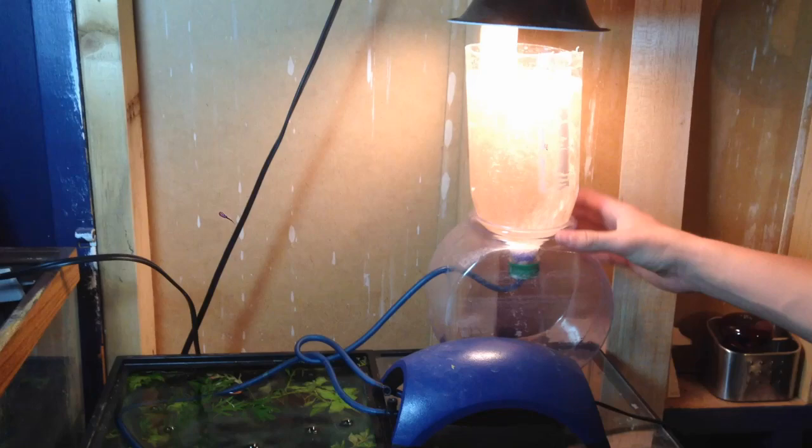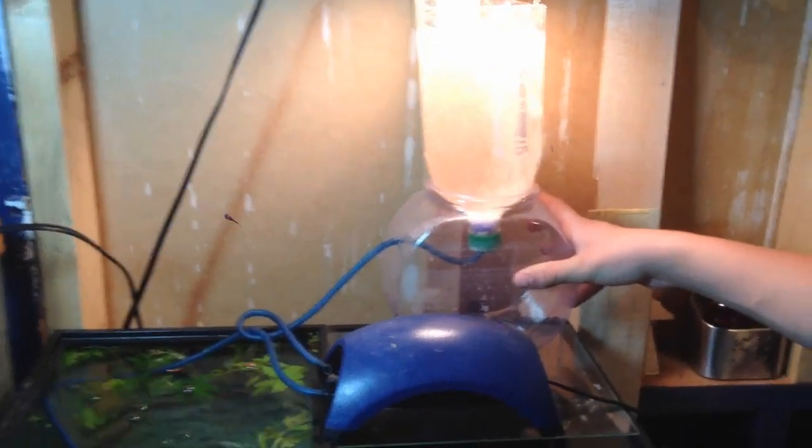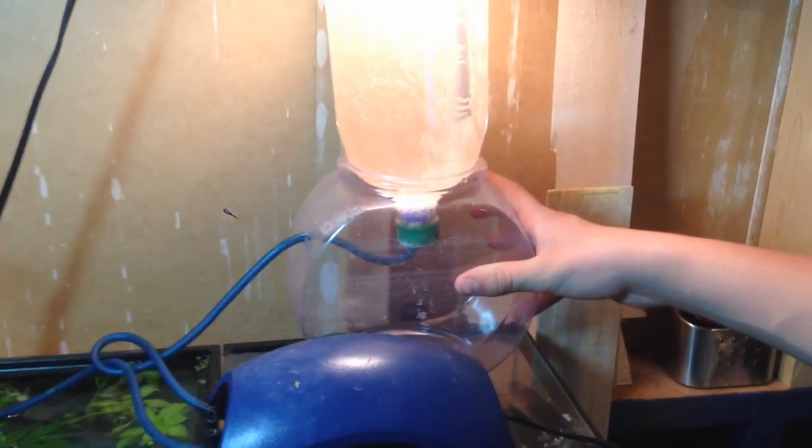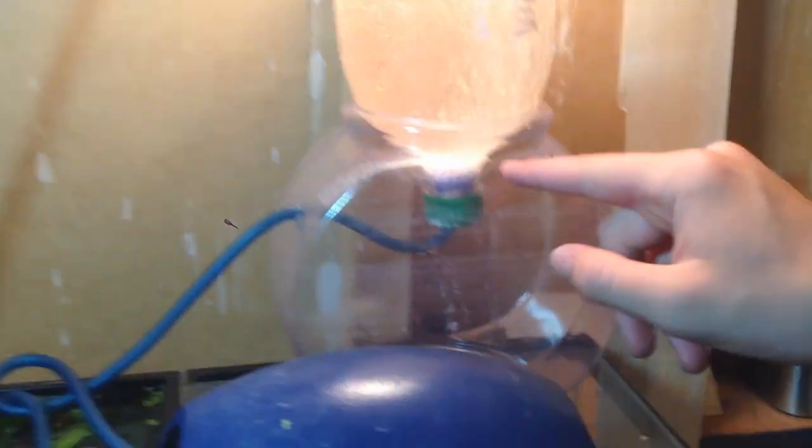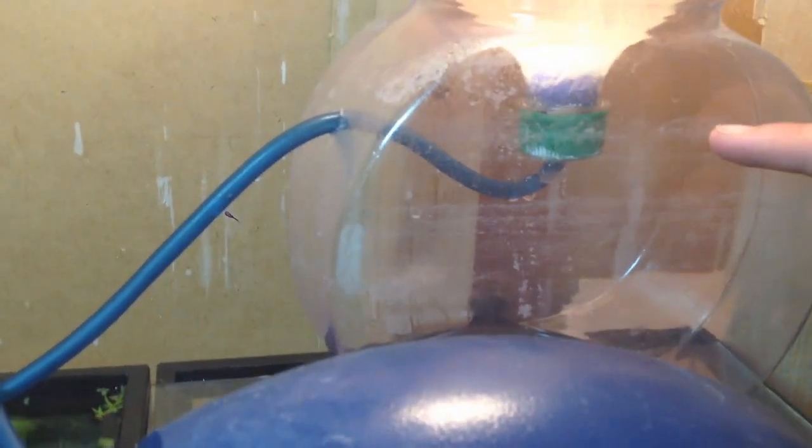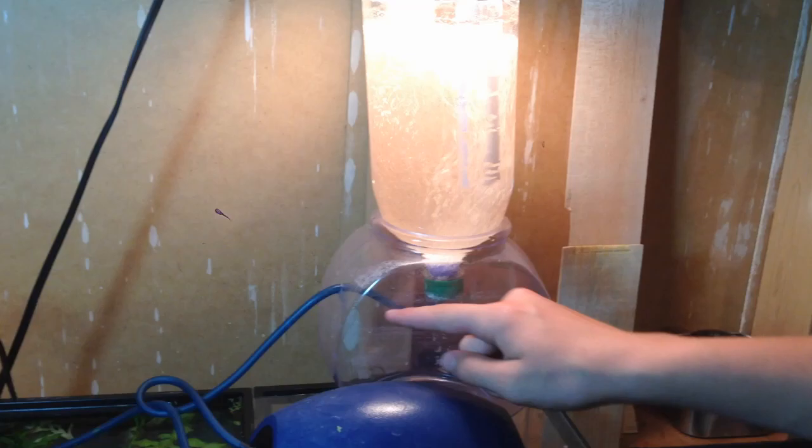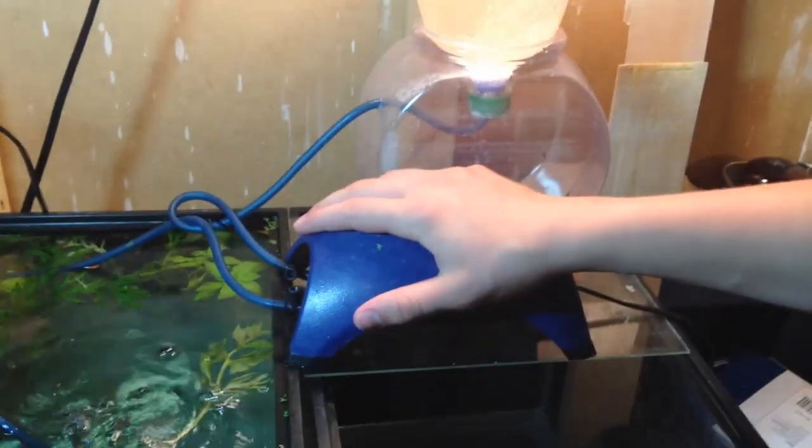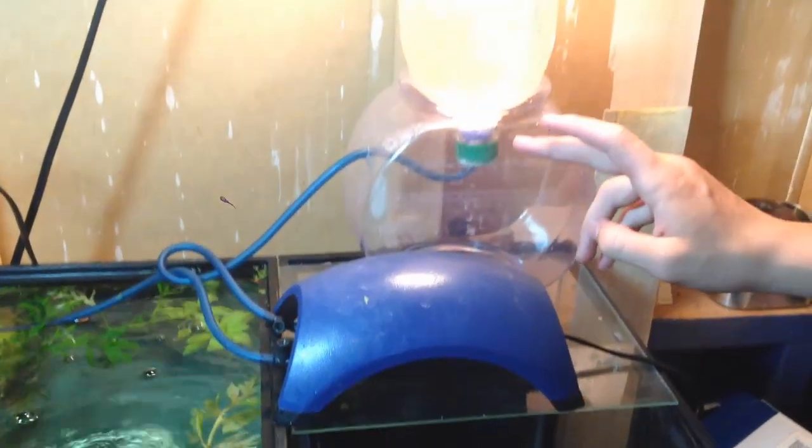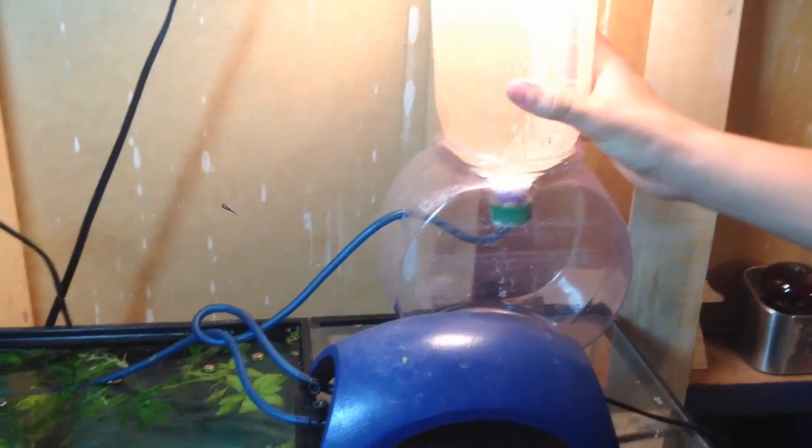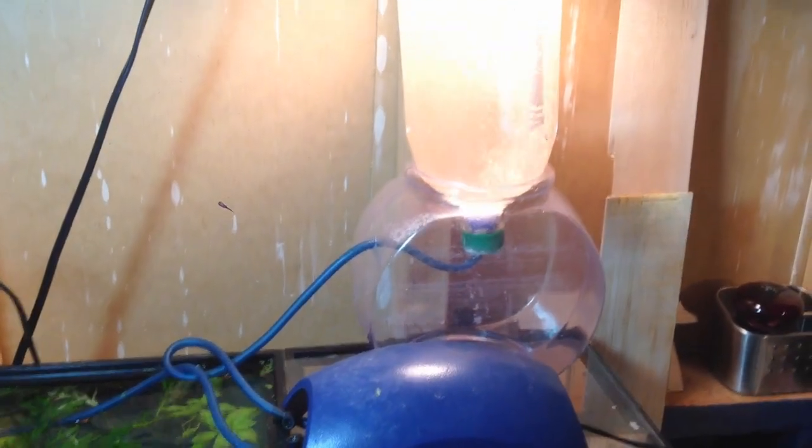Right here I have an apparatus for hatching the baby brine shrimp. As you can see I have a bubbler going to the top of the two liter bottle which is upside down inside this little goldfish bowl. And the bubbler is connected to this air pump and bubbles go up and I also have this heat lamp.